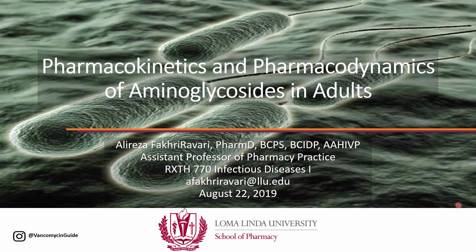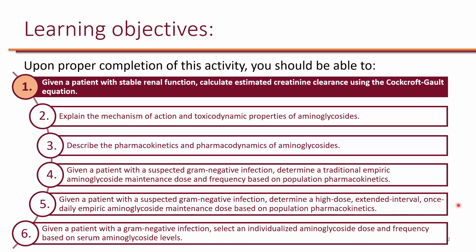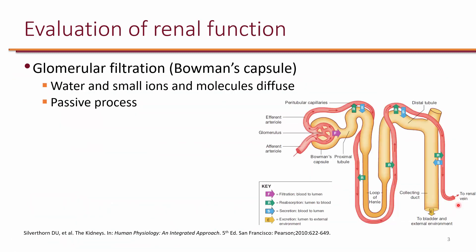I'm Dr. Fakir Averi and this is pharmacokinetics and pharmacodynamics of aminoglycosides in adults. Our first learning objective is, given a patient with stable renal function, calculate estimated creatinine clearance using the Cockcroft-Gault equation. Because aminoglycosides are almost exclusively cleared renally, it is important to be able to assess renal function. Let's take a look at what happens in the nephron.